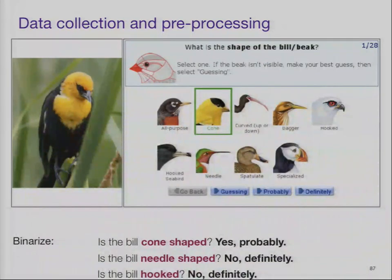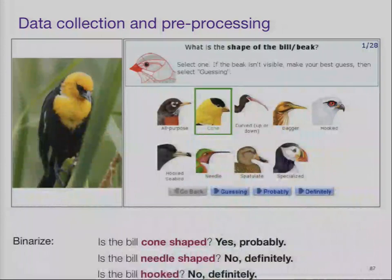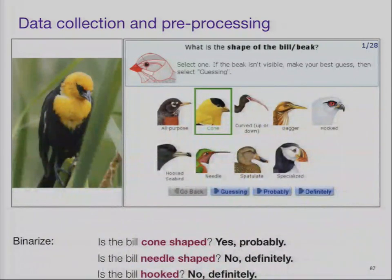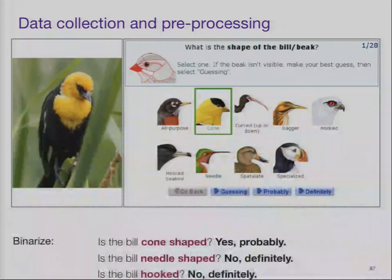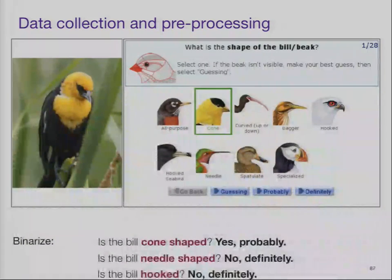A bit more detail about how the data was collected. Each Mechanical Turk user is shown an image of a bird and a caricature of the bird with a particular part highlighted. There is the question: what is the shape of the bill or beak? They select one; if the beak isn't visible, they make their best guess and select guessing. There are three options they can press: guessing, probably, definitely. Given the image, what's the shape of the beak? The data was binarized by asking binary questions rather than multinomial ones — for example: is the bill cone-shaped, yes or no? Is the bill needle-shaped, yes or no? — with a confidence level.